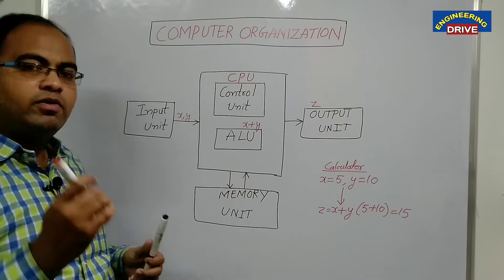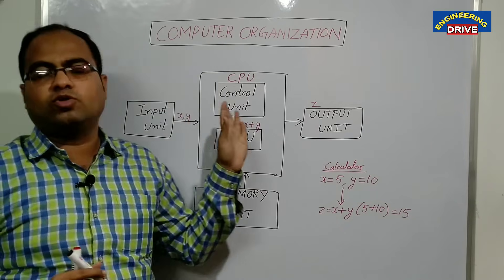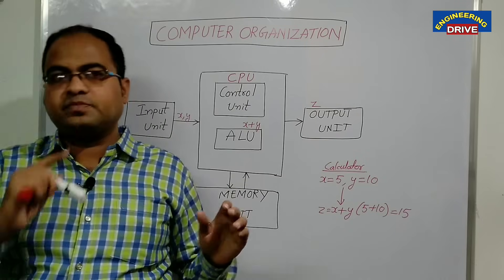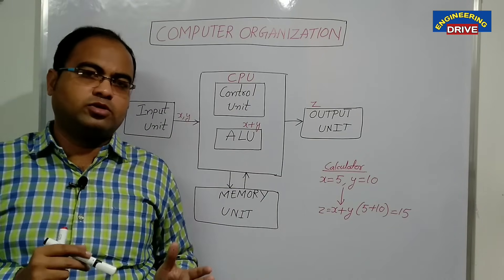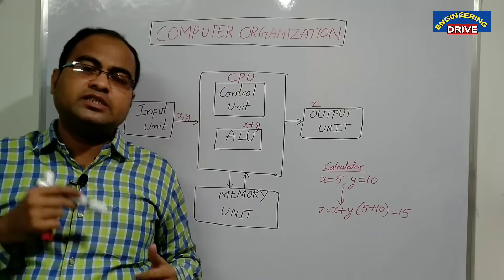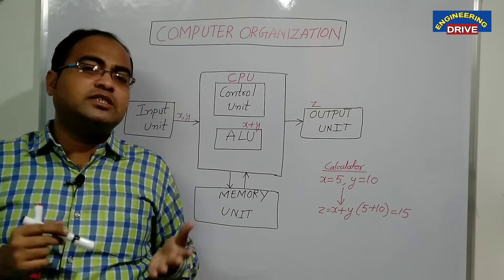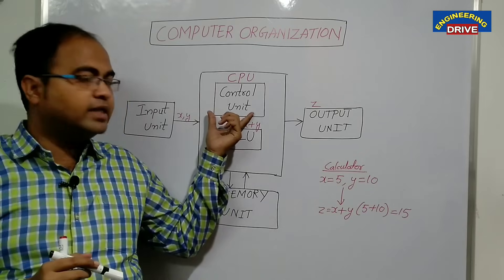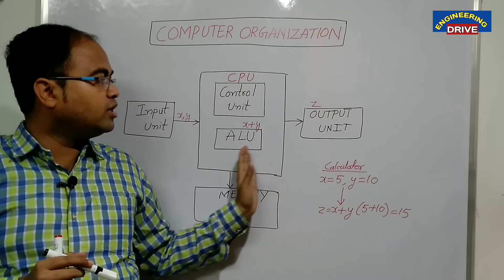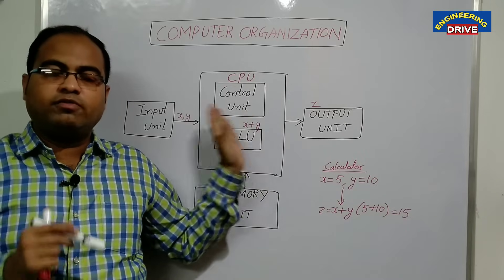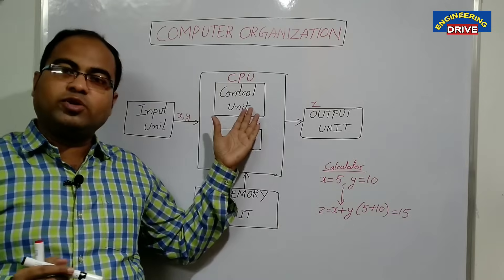What is the use and role of the control unit? As we know, in the entire computer the main part is the motherboard. In the motherboard, the most important part is the CPU. And within the CPU, the very important part is the control unit. The control unit monitors all the activities of the CPU — when we say the CPU is doing the work, internally the control unit is doing the work.